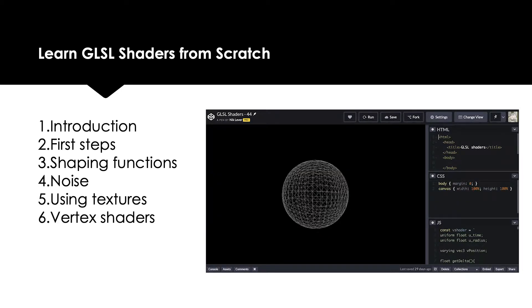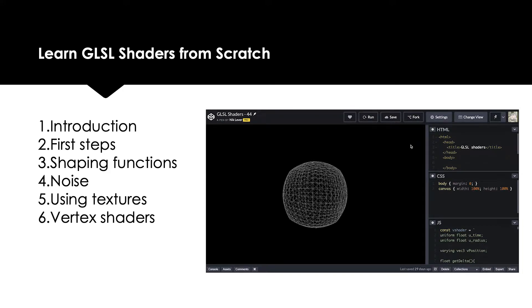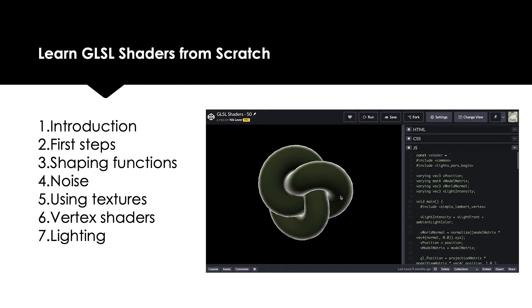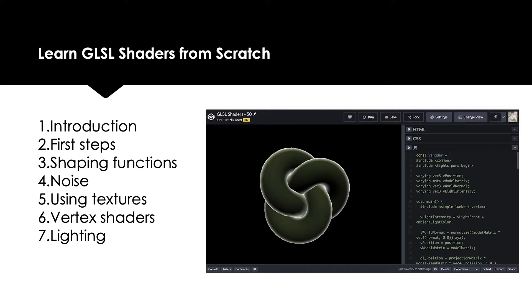Each GLSL shader has two components: the fragment shader, which is all about deciding the colour of a pixel, and a vertex shader, which is all about moving a vertex from object space to clip space. In Sections 1 to 5 we use a simple rectangle and just concern ourselves with the fragment shader. Section 6 introduces vertex shaders for the first time, bringing you into the 3D world. Section 7 looks at how to add light into your shaders.